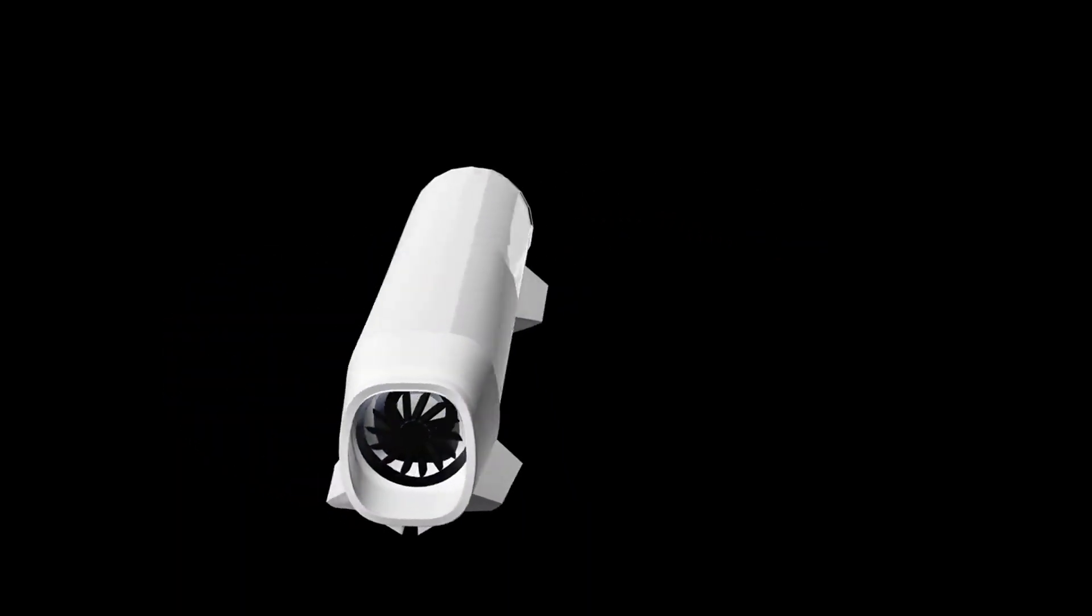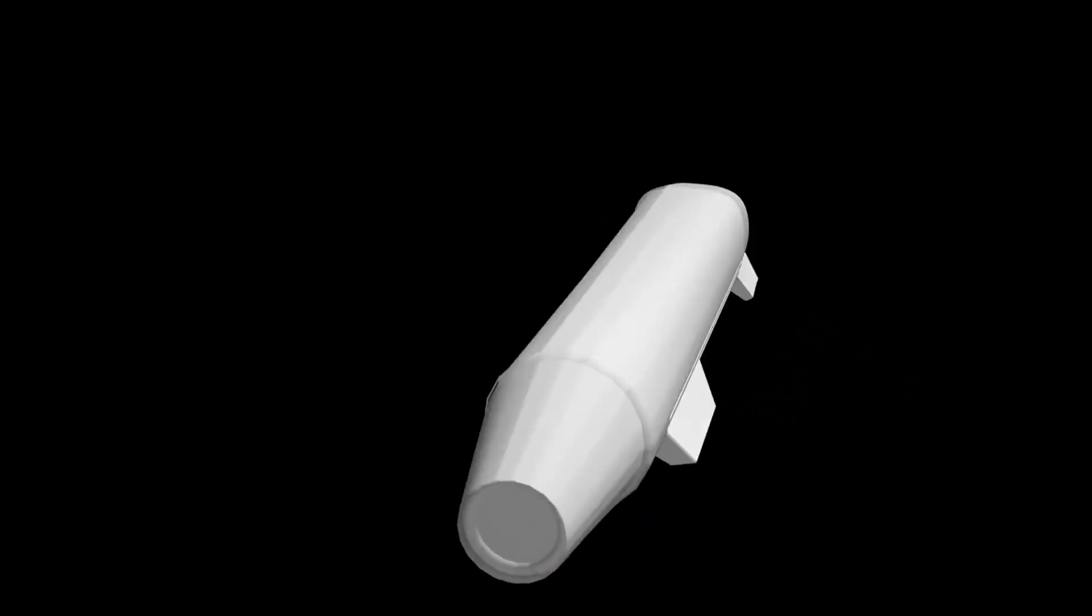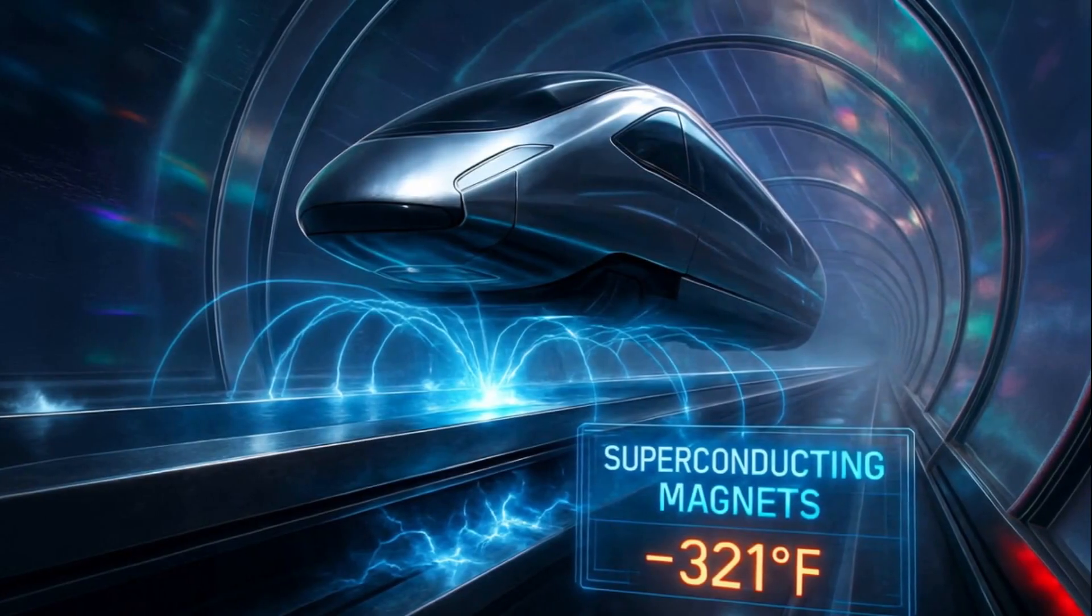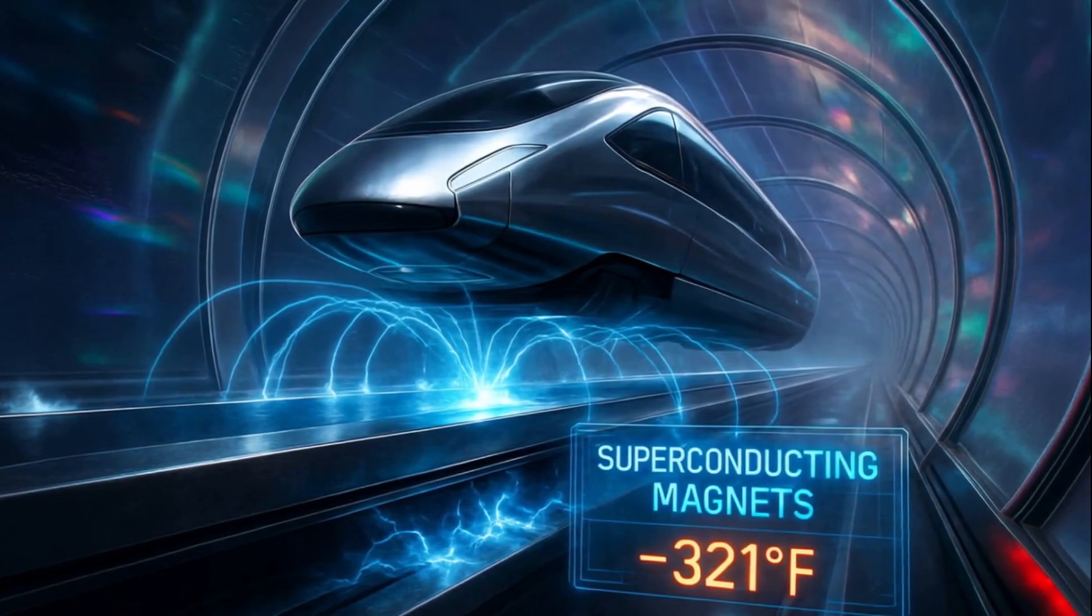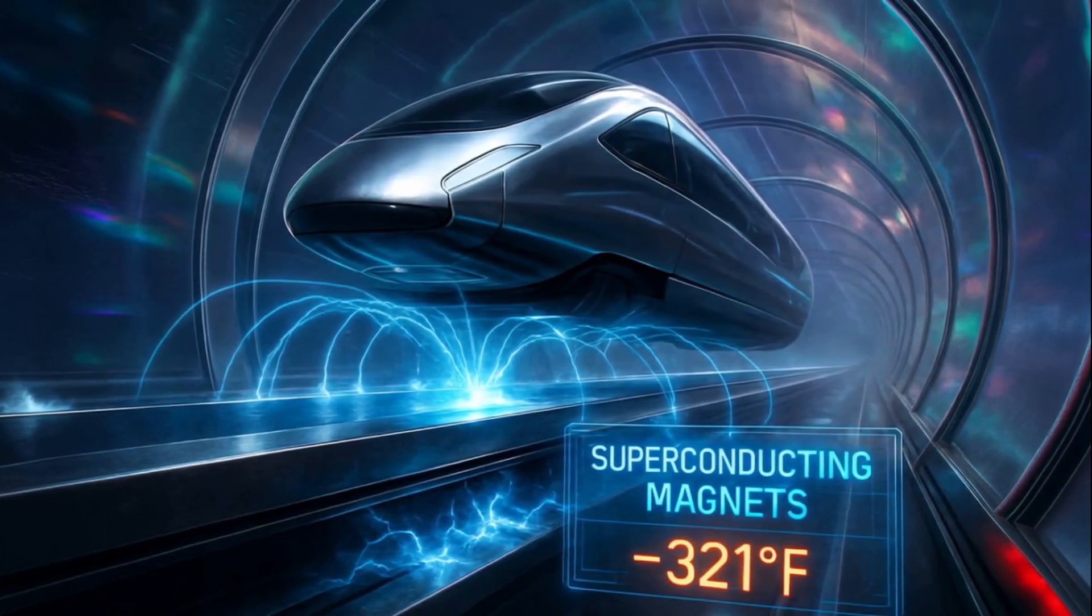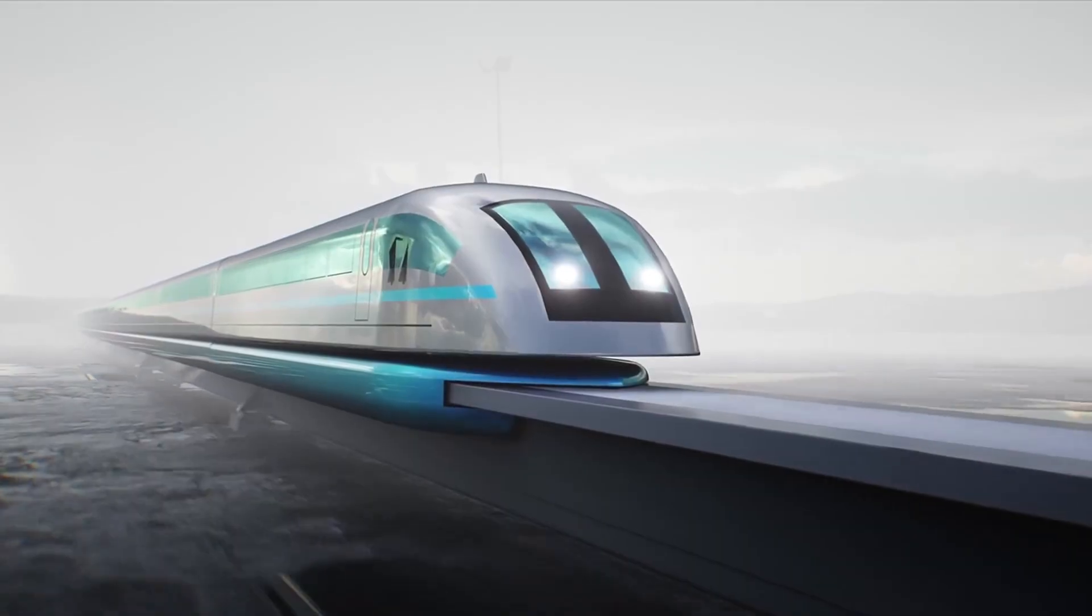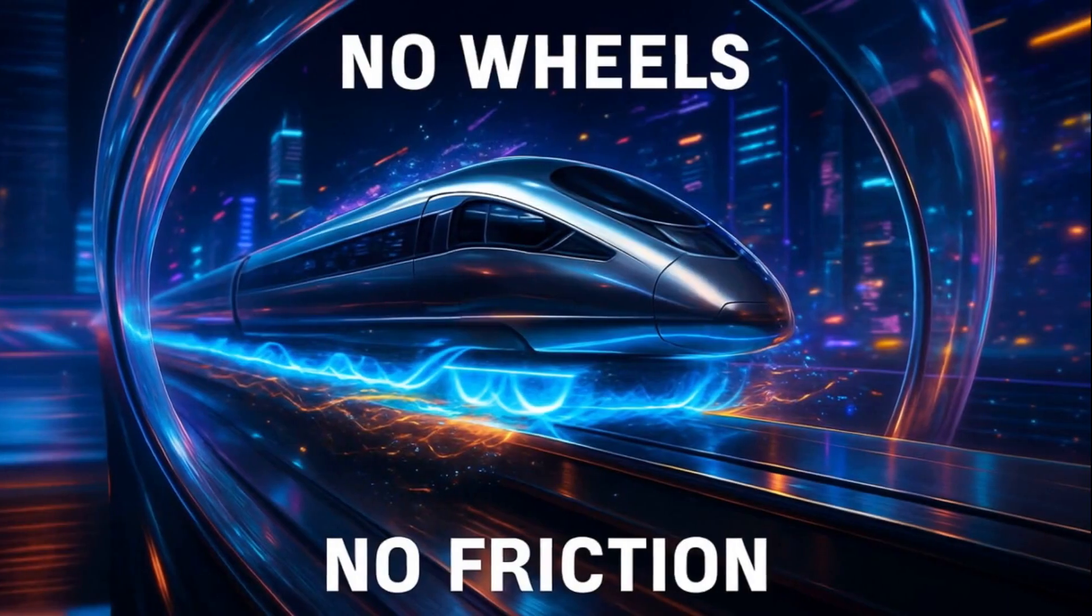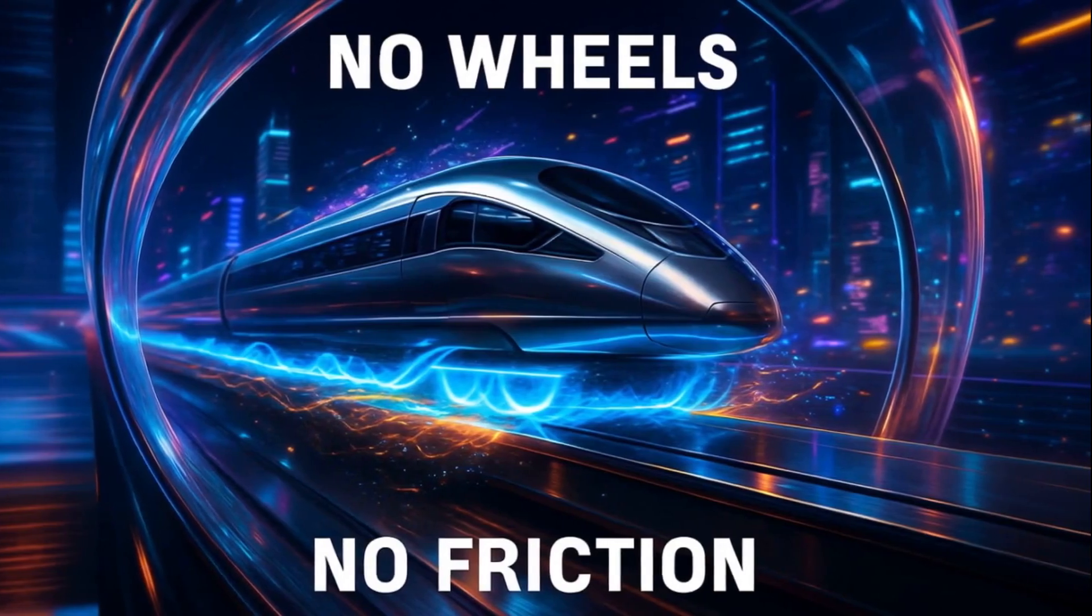Unlike traditional trains, maglevs don't run on wheels. Instead, they use superconducting magnets, cooled to minus 321 degrees Fahrenheit, that create unbreakable magnetic fields, levitating the train 10 centimeters above the track, eliminating friction entirely. No wheels, no friction, just pure magnetic defiance of gravity.